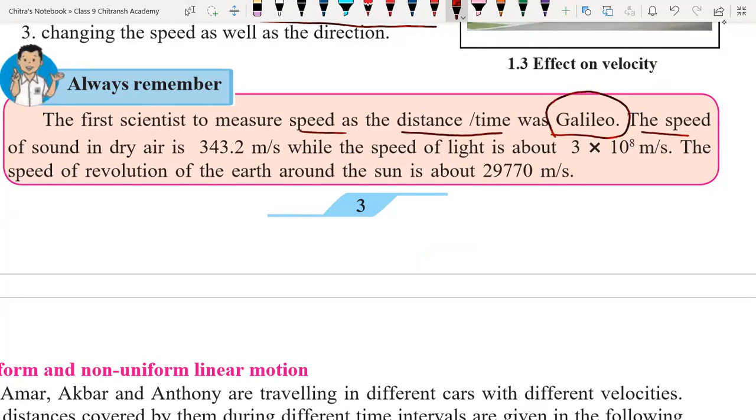Next, the speed of sound in dry air is 343 meters per second. Very important, this is the speed of sound in dry air. Dry air means low humidity.